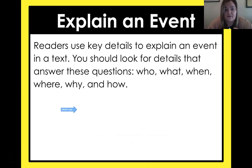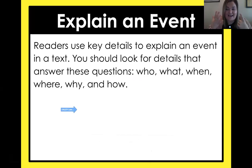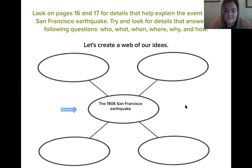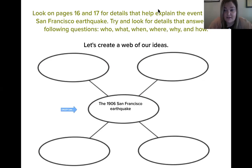That's all we're reading today. We're really focusing on going back in the text to look for details. Readers use key details to explain an event in a text. We're looking for details that answer: who, what, when, where, why, and how. Let's look back — what details does the text include to help us understand the events surrounding the San Francisco earthquake? So pause the video here — we're going to make this organizer. Our main idea is the San Francisco earthquake. Make this web with me, and we'll meet back in a minute or two.